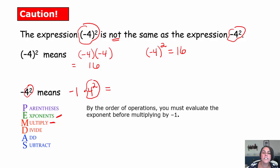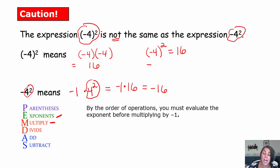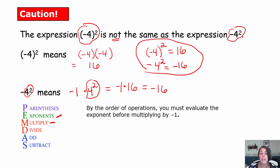Therefore, 4 to the second power is 4 times 4, or 16. Now we have negative 1 times 16, which is negative 16. So negative times 4 to the second power ends up being negative 16. These are very different expressions — they mean very different things. One ends up being positive, the other ends up being negative, and that's an important distinction.